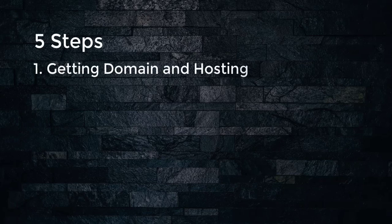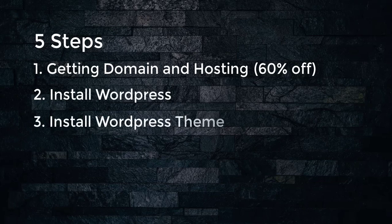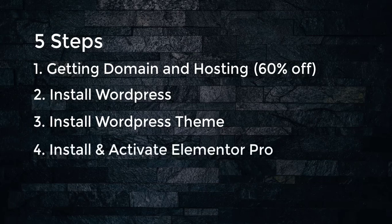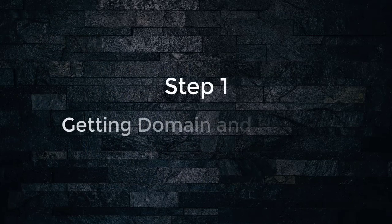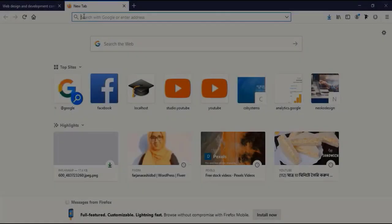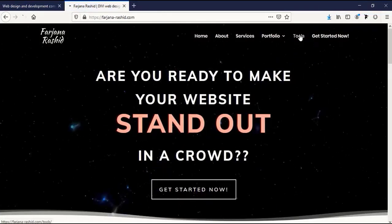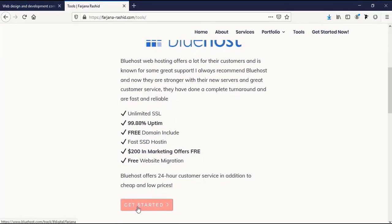The five steps are: getting your domain and hosting (you can get your domain completely free for the first year and get a 60% discount through my link), installing WordPress, installing a WordPress theme, installing and activating Elementor Pro, and finally designing the website from scratch. If you already have domain and hosting, you can skip this part. To get domain and hosting, go to farjanalucid.com, go to tools, and here is the Bluehost web hosting link — click on Get Started.